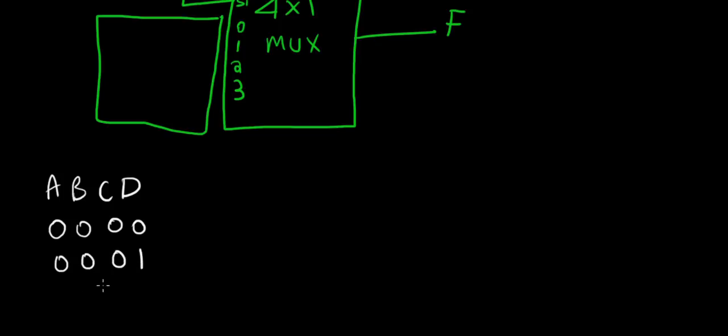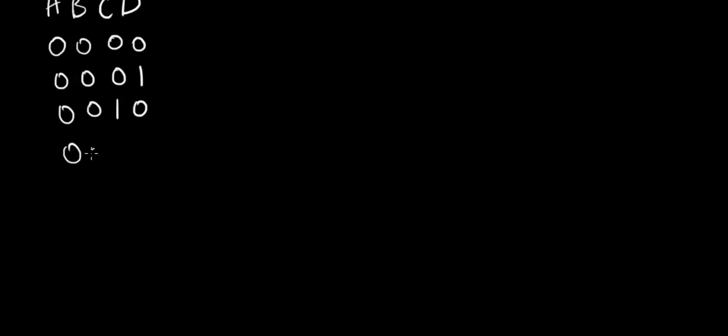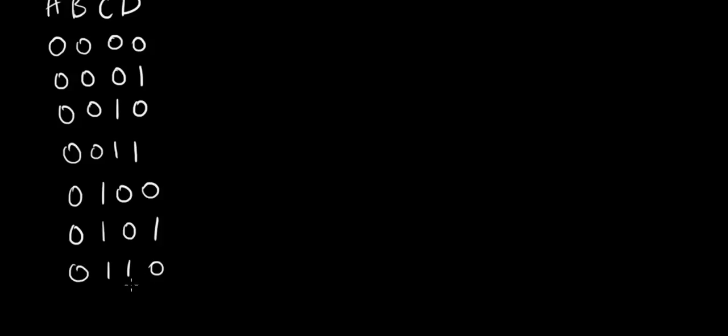We list all 16 combinations: starting from 0,0,0,0,0 then 0,0,0,1,0 and continuing through 0,0,1,1 giving 0,1,0,0,0 then 0,1,0,1,0 then 0,1,1,0 and 0,1,1,1, finishing all the A=0 rows, and then doing the same for A=1 to get all 16 combinations.